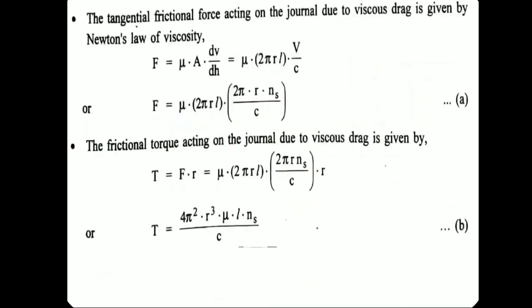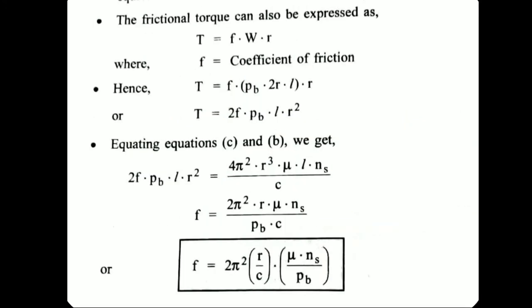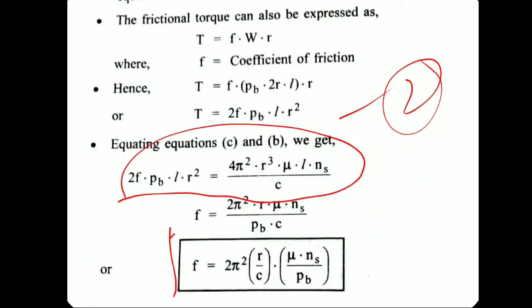Equating equation one and equation two, we solve for the coefficient of friction f: f = 2π²·(r/c)·(μ·ns/p_b). This simplified result is called the Petroff equation. It indicates two dimensionless parameters — r/c (radius to clearance ratio) and μ·ns/p_b — that influence the coefficient of friction and other frictional properties of the bearing.